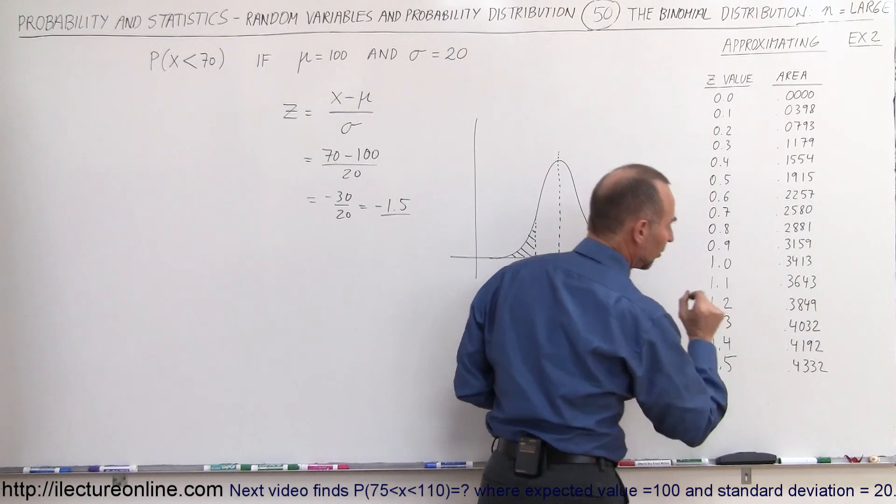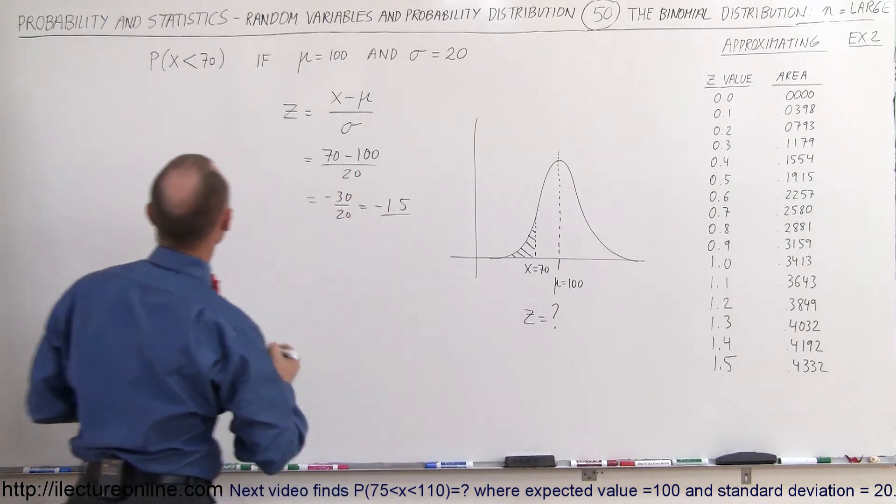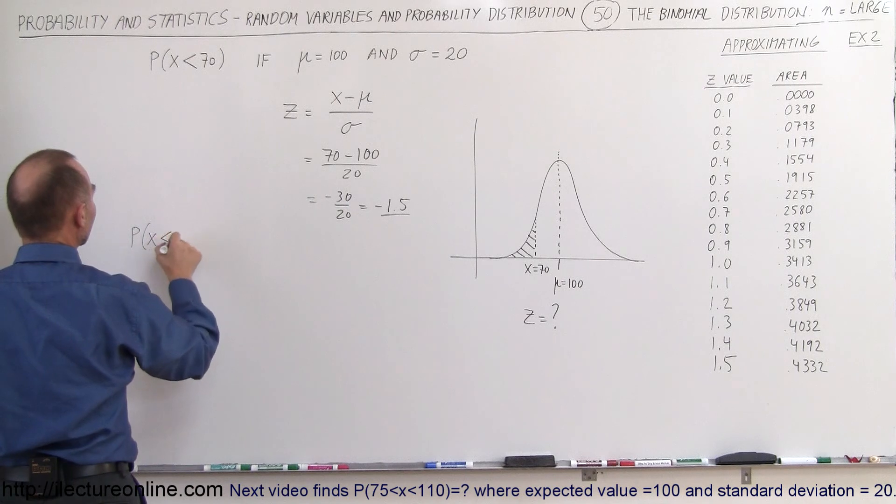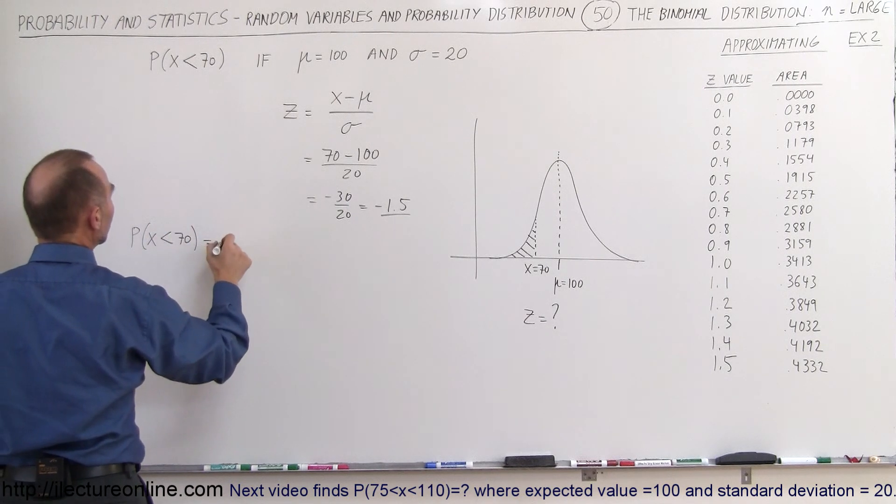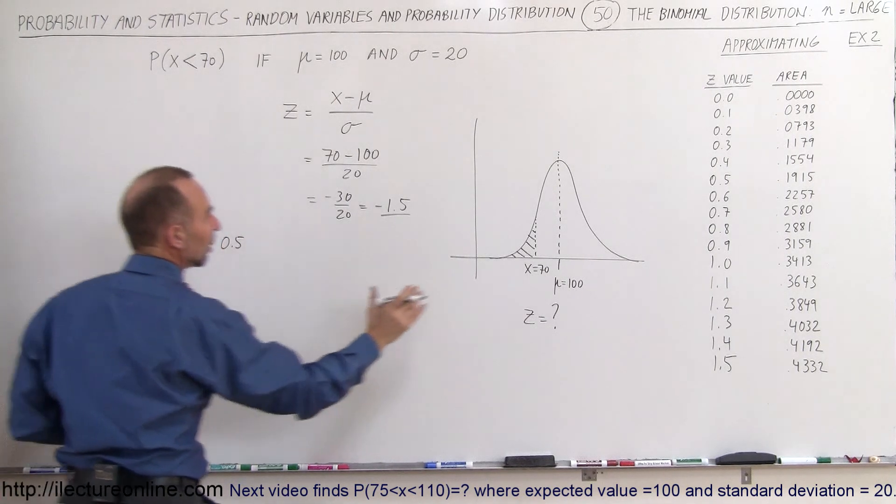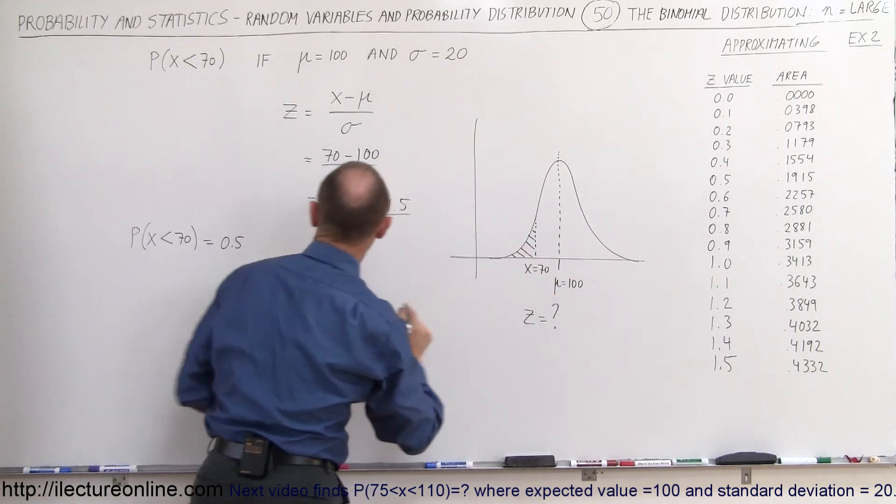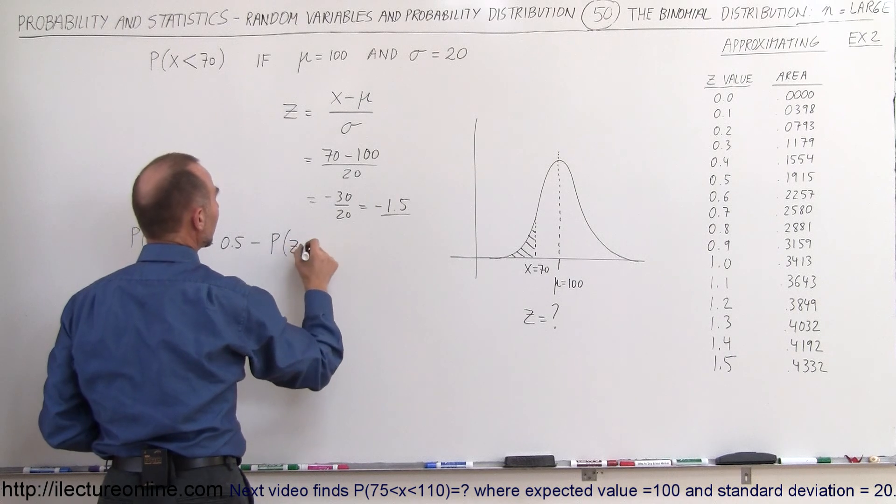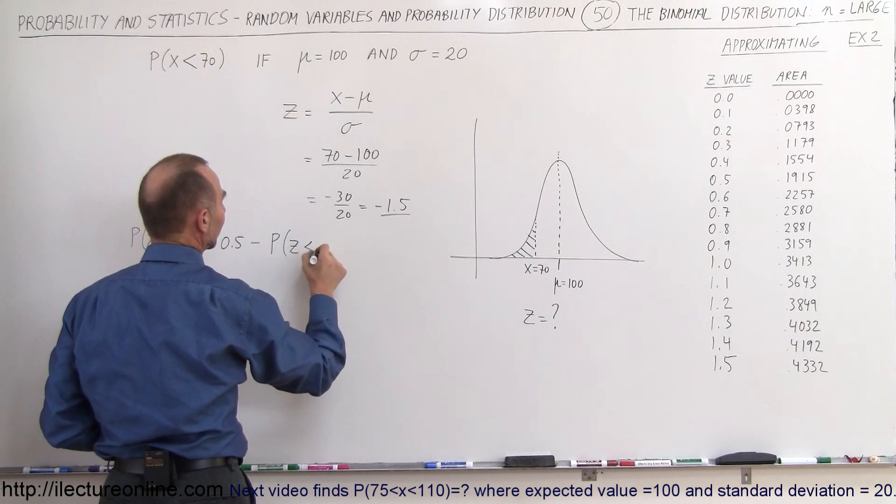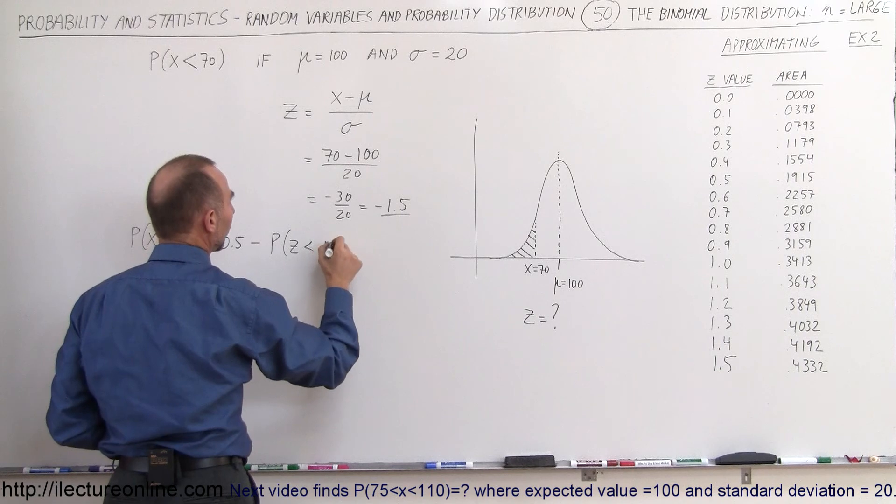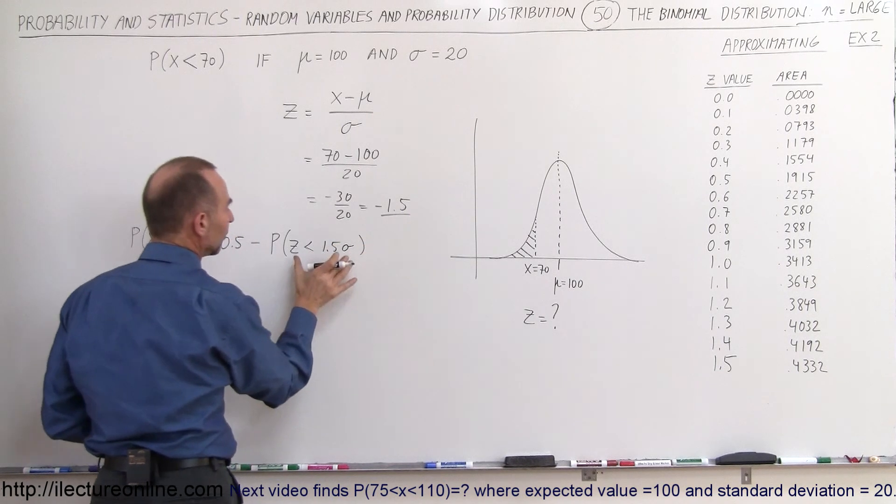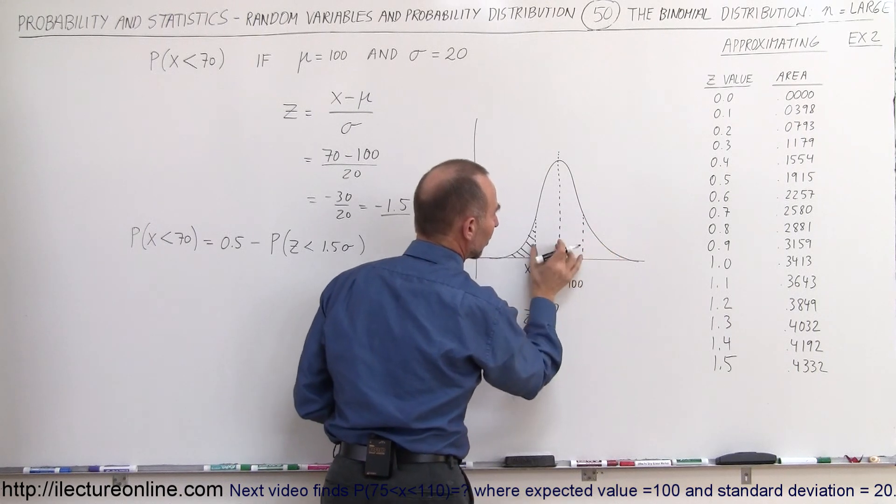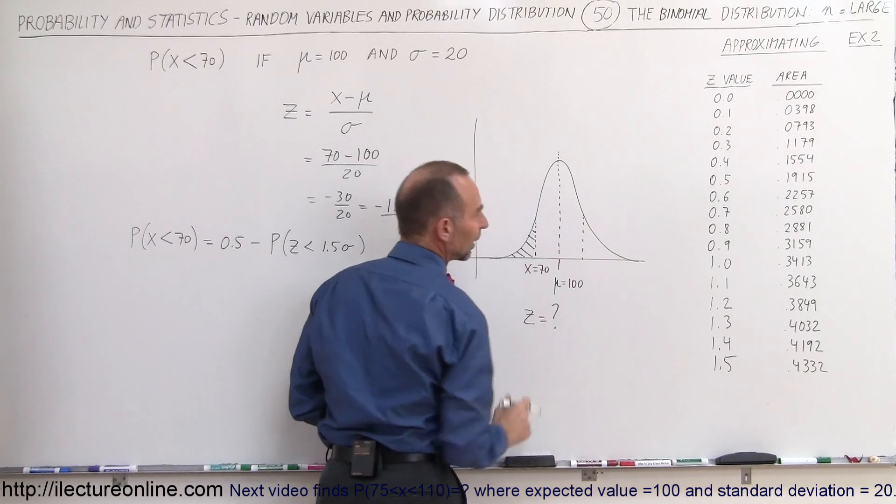So what we can say here is the probability of x being less than 70, that is equal to 0.5, which is the whole area right here from there to there, minus this area, that would be minus the probability that z is less than 1.5 sigma. So this will give us this area right here, which is the same as this area right here. So it doesn't matter if we take this area, this area, we get the same value.